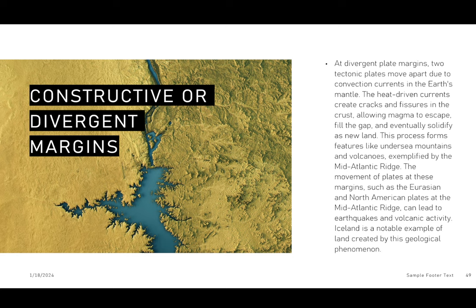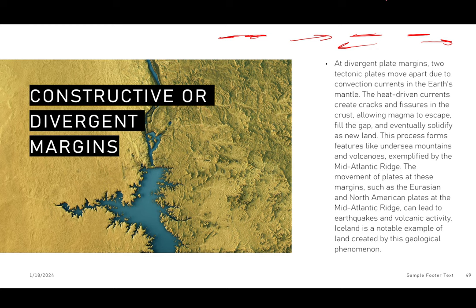Constructive or divergent plate margins are the margins that diverge from each other. If you have two plates together, they diverge — one going this way, one going that way — constructing new land. That's why they're called constructive plate margins. The magma goes up from the space it provides, creating new crust. This is exemplified by the Mid-Atlantic Ridge.